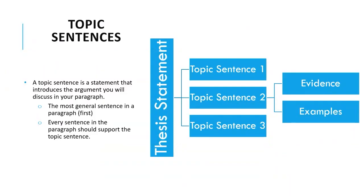A topic sentence is a statement that introduces the argument you will discuss in your paragraph — what is your paragraph about? It is the main idea around which the paragraph is built. The most general sentence in the paragraph is your first sentence, and every sentence after that should support that topic sentence. Throughout your literature review, you will have a thesis statement, then topic sentence one with evidence, topic sentence two with evidence, and so on. Before even starting to write, make a structure: what will this paragraph be about, what will the next paragraph be about, and how will this link to the next?